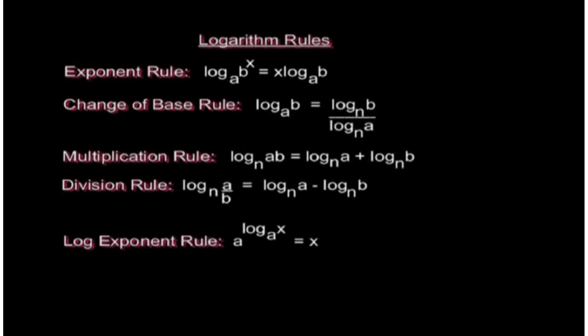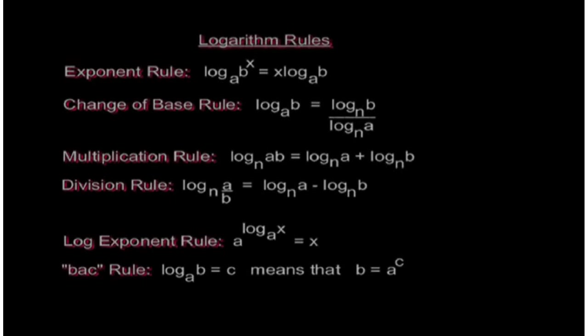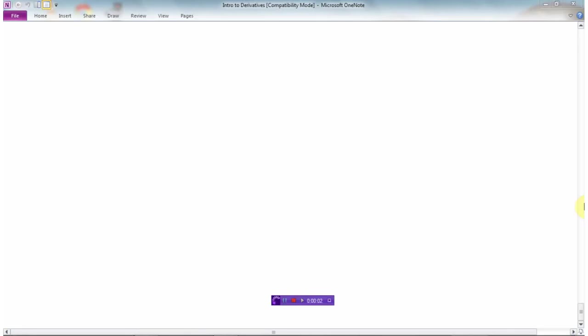The log exponent rule that says A to the power of log base A of x will simply equal x. As long as the bases are the same, you'll just equal x. And then there's the back rule that we use for changing logs to exponents. So log base A of B equals C means that B equals A to the C. In other words, it spells the word back.